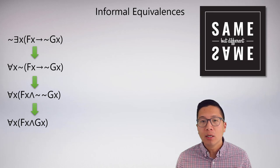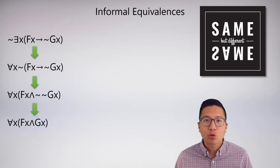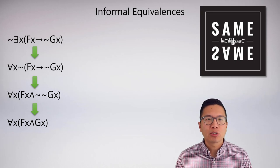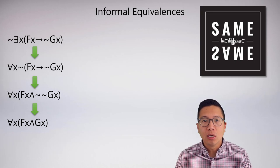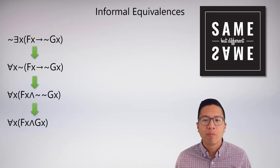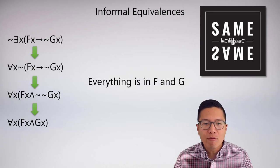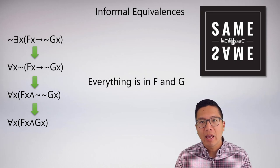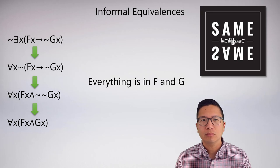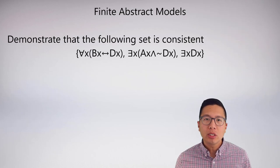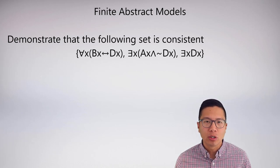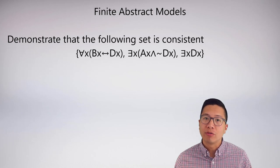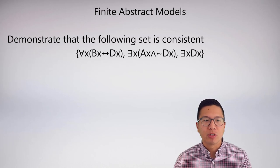Now why does this matter? Because the last sentence after the informal equivalence translates quite nicely. I've removed the negation, and even though I have a universal paired with a conjunction it's still easier to translate — and this means that everything is an f and a g. We're now going to use these skills of abstract translation to build a finite abstract model, and this model will be extensional, meaning we'll use set theory from the previous video.